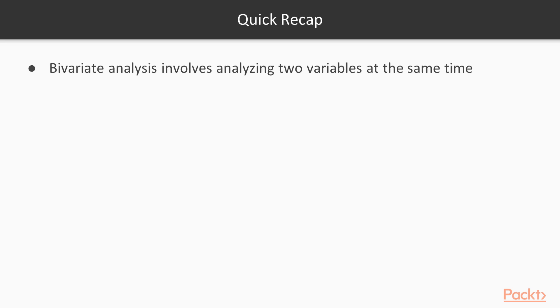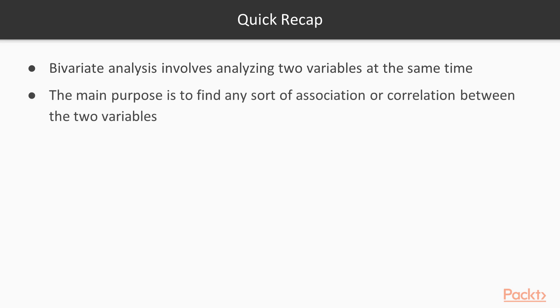Let's take a recap of what we have learned. Bivariate analysis involves analyzing two variables at the same time. The main purpose is to find any sort of association or correlation between the two variables.